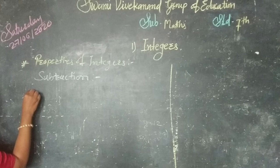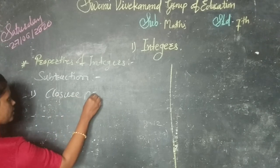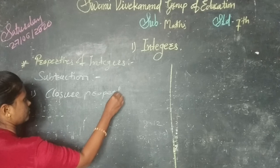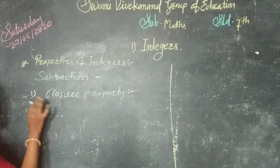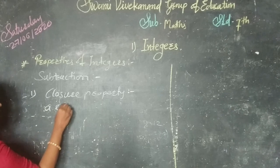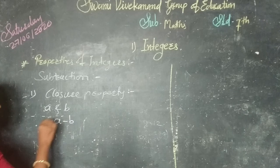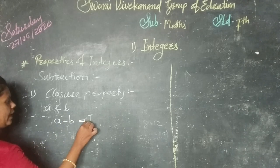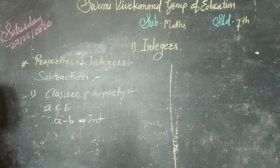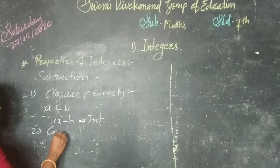The first is the closure property. What is the closure property of an integer for subtraction? If we suppose A and B are two integers, then we can say the subtraction of any two integers is always an integer. This is the closure property, whereas the second property is the commutative property.